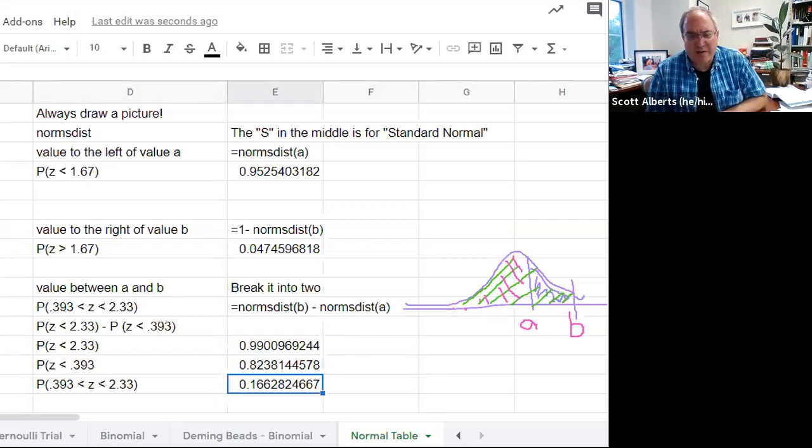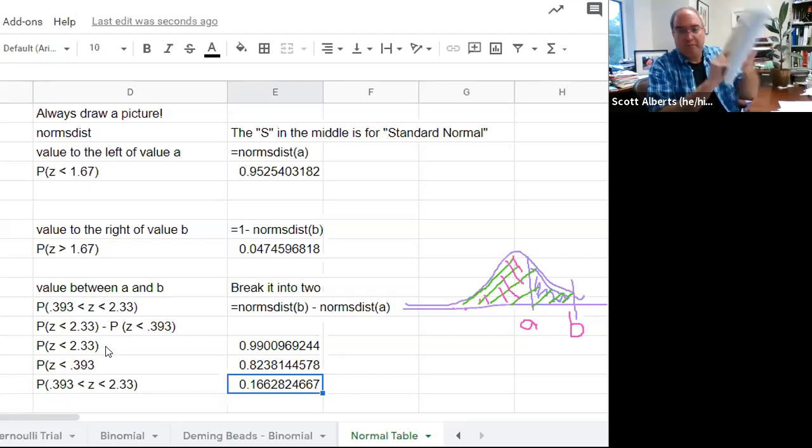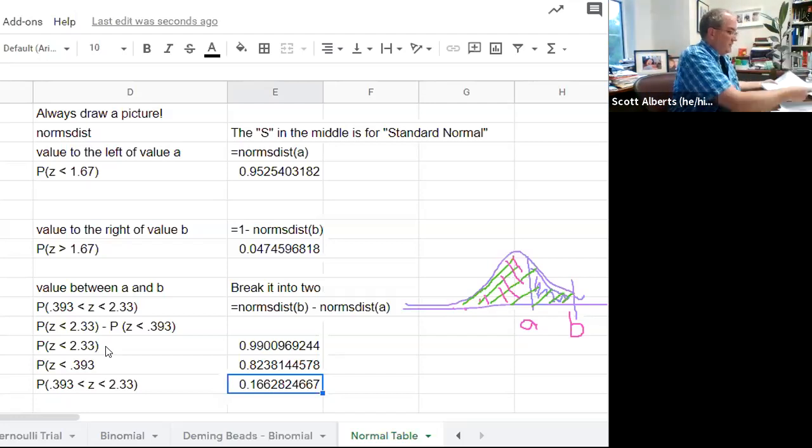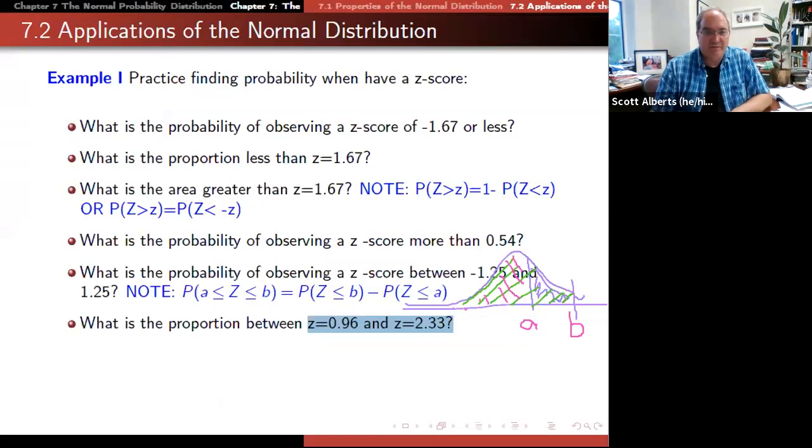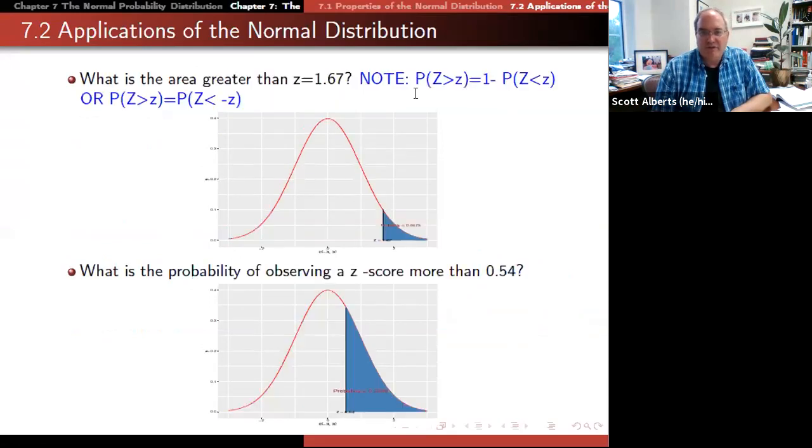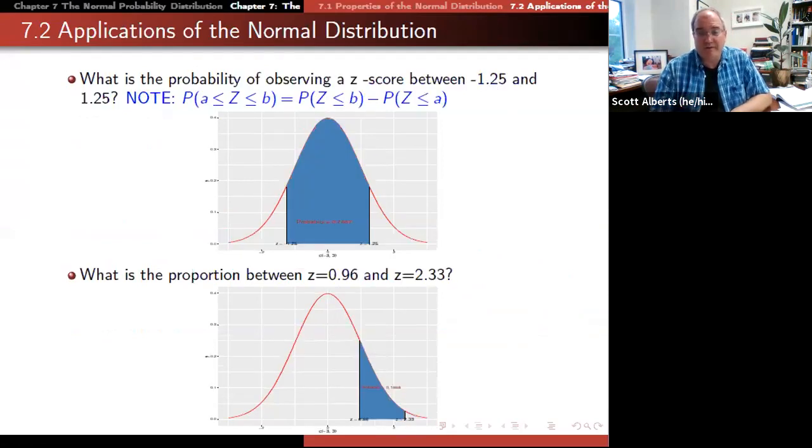If we were using the table, we would just take 2.33 and we would look it up on the table. I'm going to hold this up really close so you can see that 2.33 is in fact 0.9901 on the table. We just subtract it that way. If you ever have to use the table because you're trying to do it the old-fashioned way, that's okay. It's actually pretty easy to use. My advice is to always, always, always draw it.